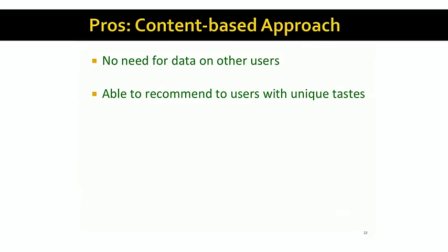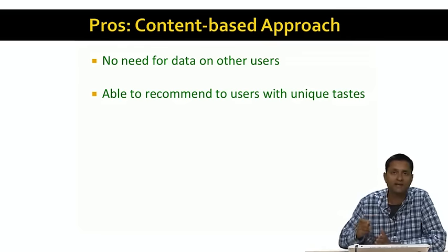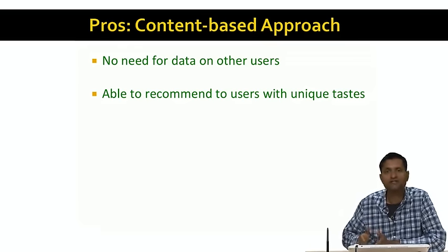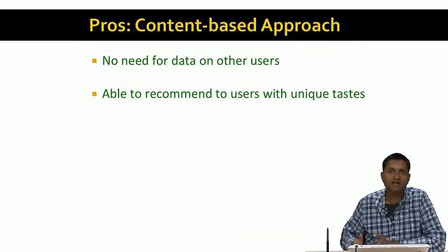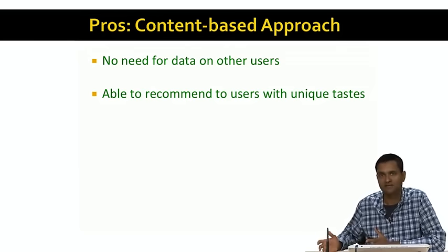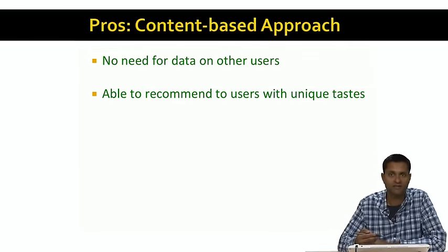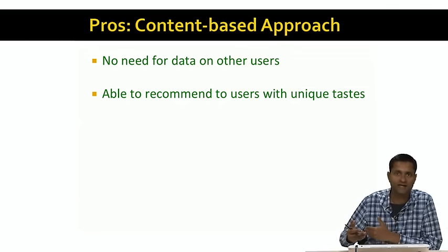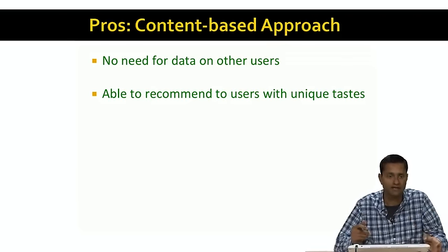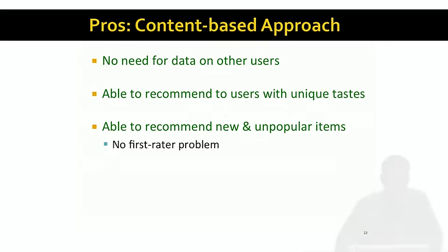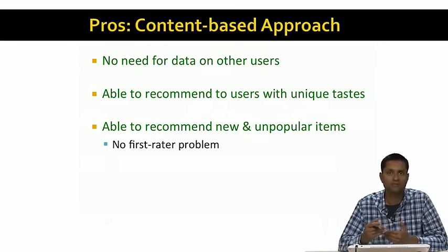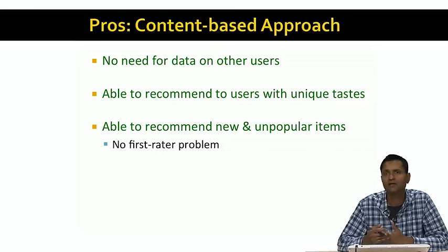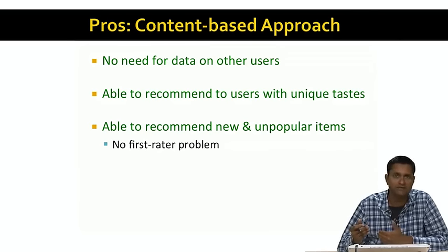Another advantage is that you can recommend to users with very unique tastes. In collaborative filtering, to make recommendations you need to find other similar users — but if a user has very unique or idiosyncratic tastes, there may not be any similar users. The content-based approach handles this naturally, as long as we can build item profiles for items the user likes. A third pro is that we are able to recommend new and unpopular items. When a new item comes in, we don't need any ratings from users to build the item profile — the profile depends entirely on the features of the item, not on how other users rated it. So we don't have the so-called first rater problem.